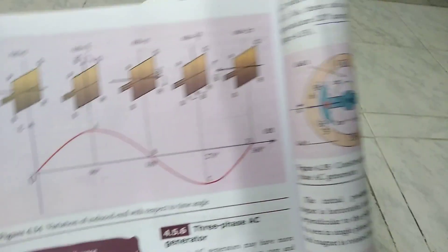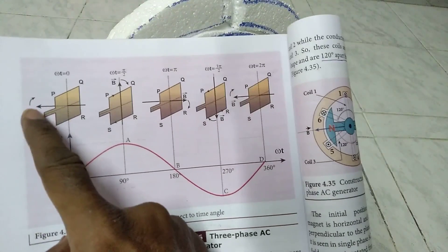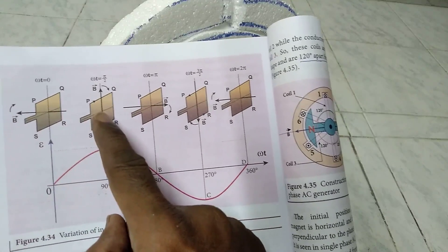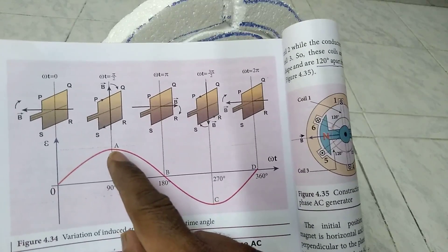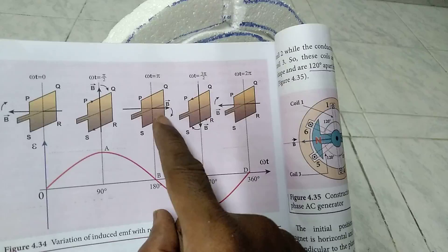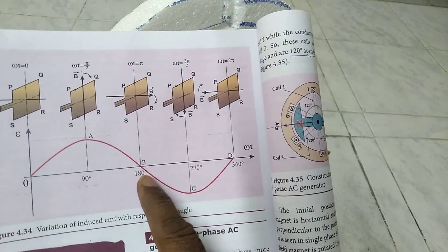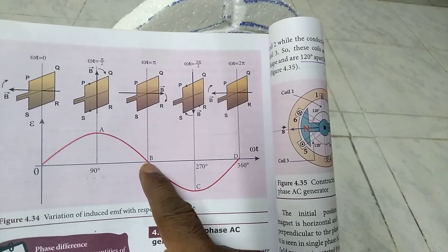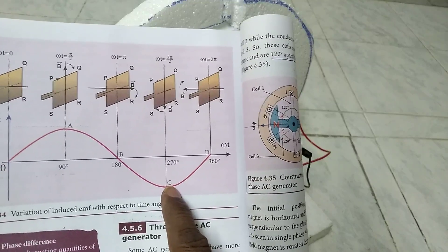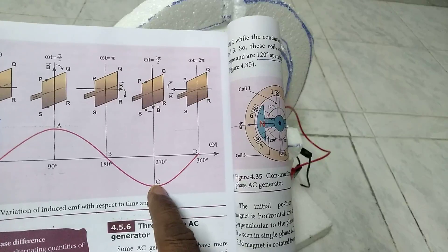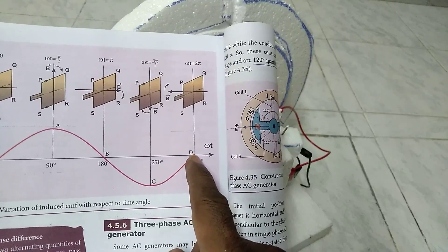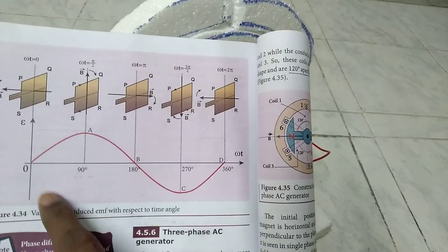If we do a graph: in the first position, A-vector and B-vector have an angle of zero, so induced EMF is zero. In the second position, the angle is 90 degrees, so induced EMF is maximum. In the third position, the angle is 180 degrees — sin 180 equals zero — so induced EMF is zero. In the fourth position, the angle is 270 degrees — sin 270 equals minus one — so induced EMF is negative maximum. In the last position, angle is 360 degrees — sin 360 equals zero — so induced EMF is zero. This is one complete cycle.